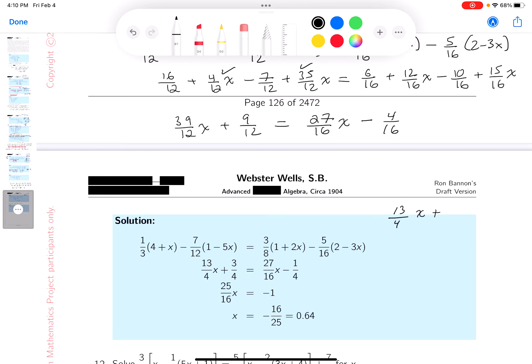All right and I'm looking at the nine twelfths and I'm going to say divide by three again and that would be three quarters. And then I got the twenty-seven sixteenths, there's not much I can do about that. It's simply twenty-seven sixteenths of an x minus one quarter.